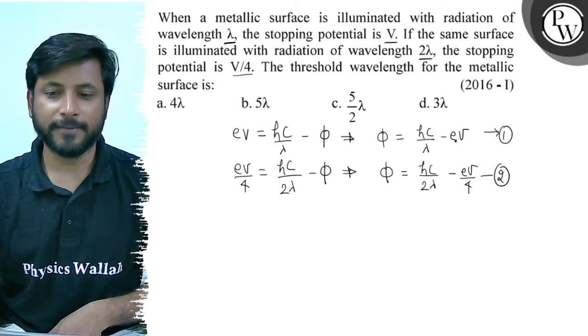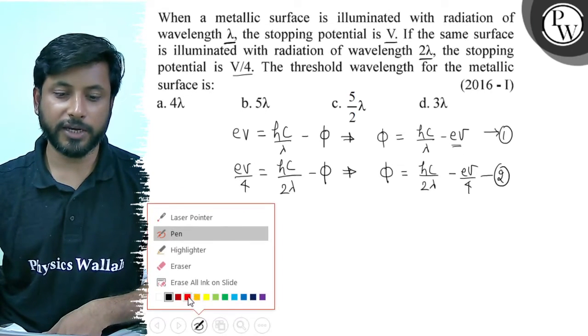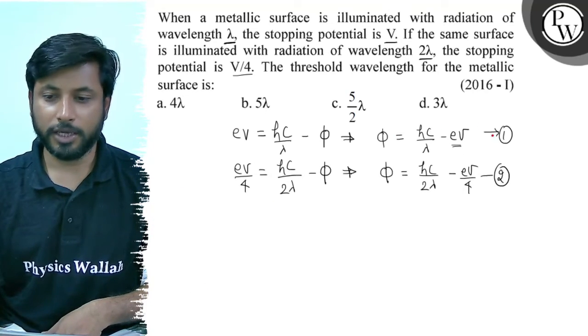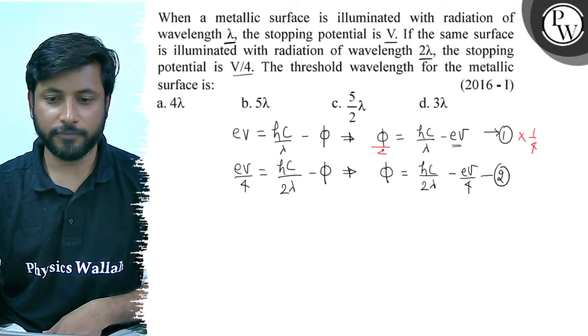If we manipulate the second equation, we get eV equals to hc by 2 lambda minus phi, which becomes eV equals to hc by 4 lambda minus phi by 4.